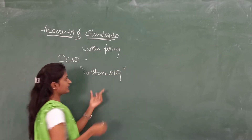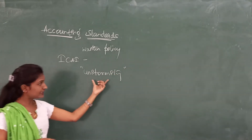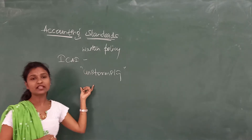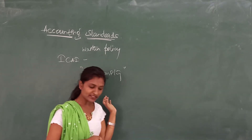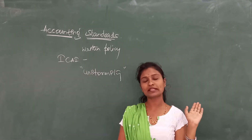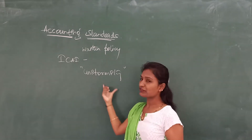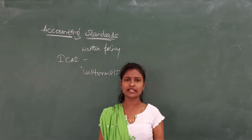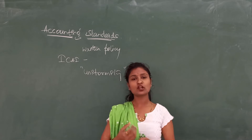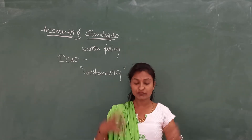Uniformity is another key purpose of accounting standards. Transactions recorded in the books of accounts should be uniform, clear, comparable, and reliable. These are the qualitative characteristics involved.